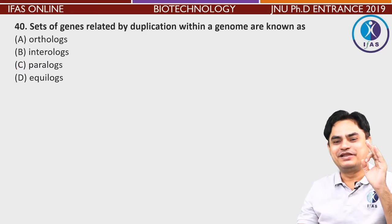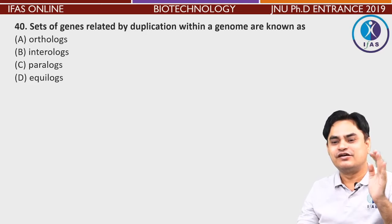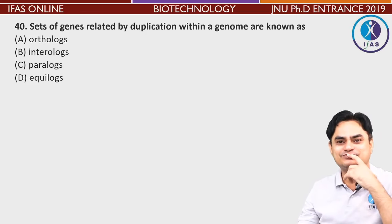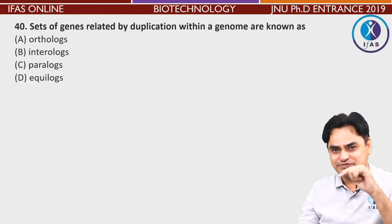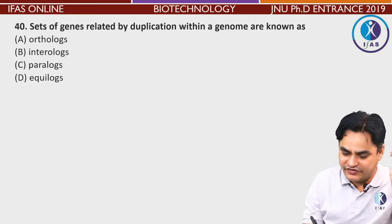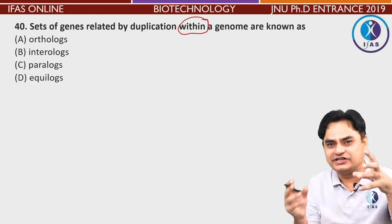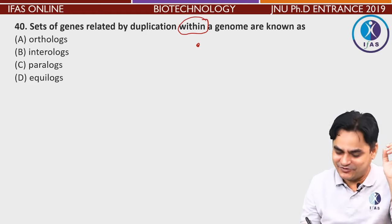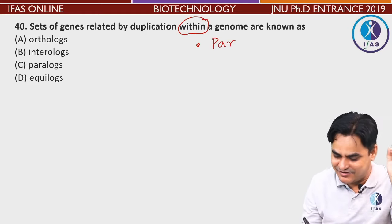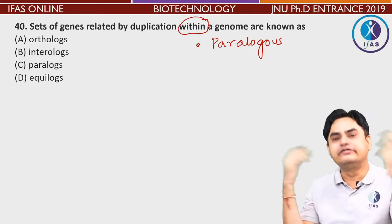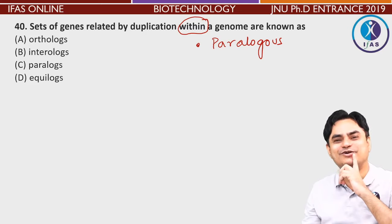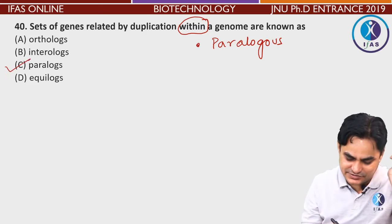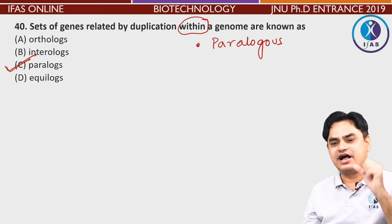Set of genes related by duplication within a genome are known as — within a genome where duplication and divergence has occurred, they are called paralogous. If they were in different genomes or different species, the answer would be orthologous. So here the answer is paralogous.